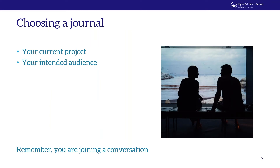Before investigating journal options, spend time understanding your project and the audience you want to reach. Throughout your career you'll produce a variety of content — research articles, review articles, literature reviews, systematic reviews, position pieces, case studies, and more. My colleague Dimitra will talk about the many article types F1000 Research publishes. Take time to understand what your current project requires in terms of communication — sometimes writing for specialists, sometimes for the general public or policy makers.